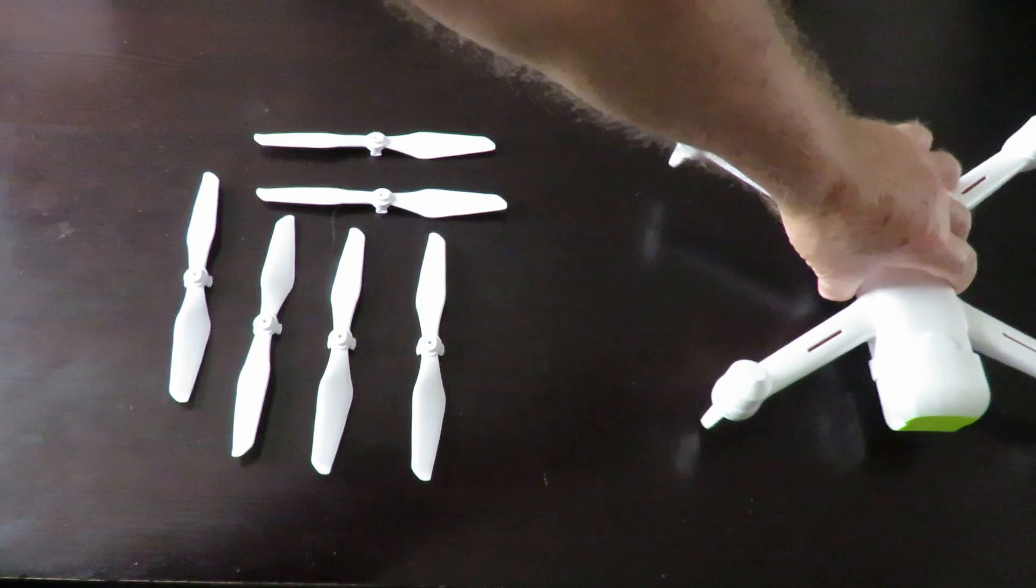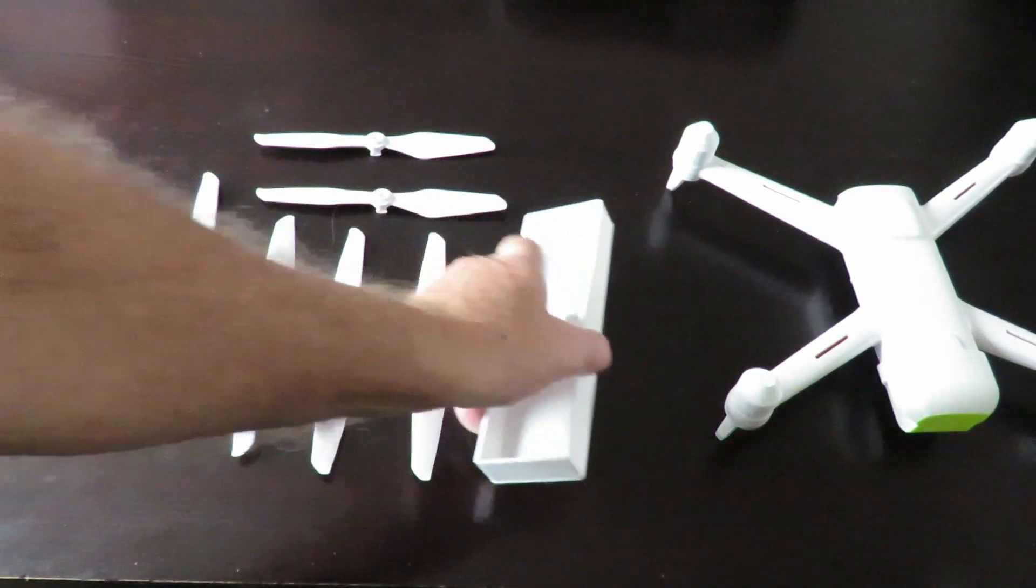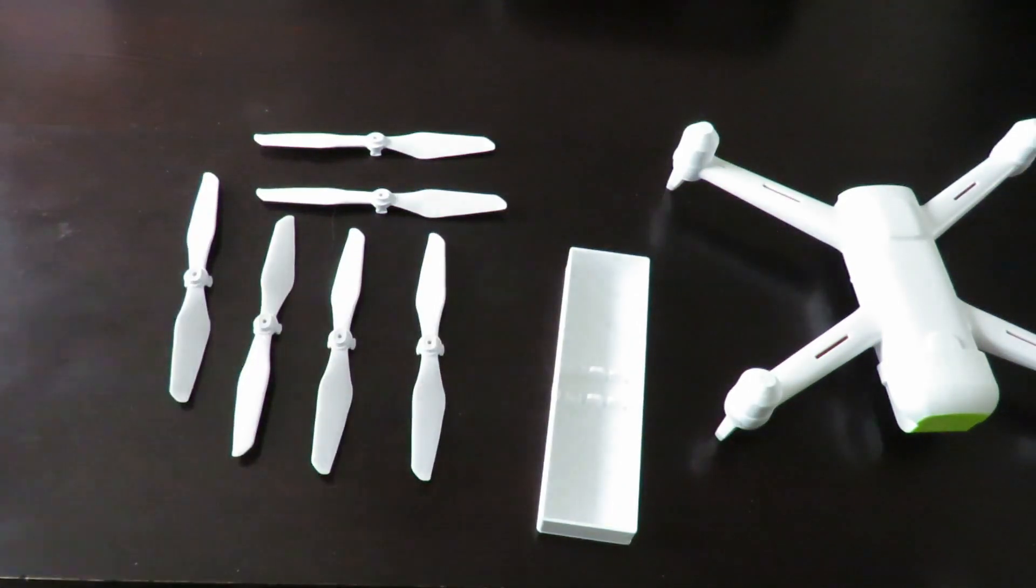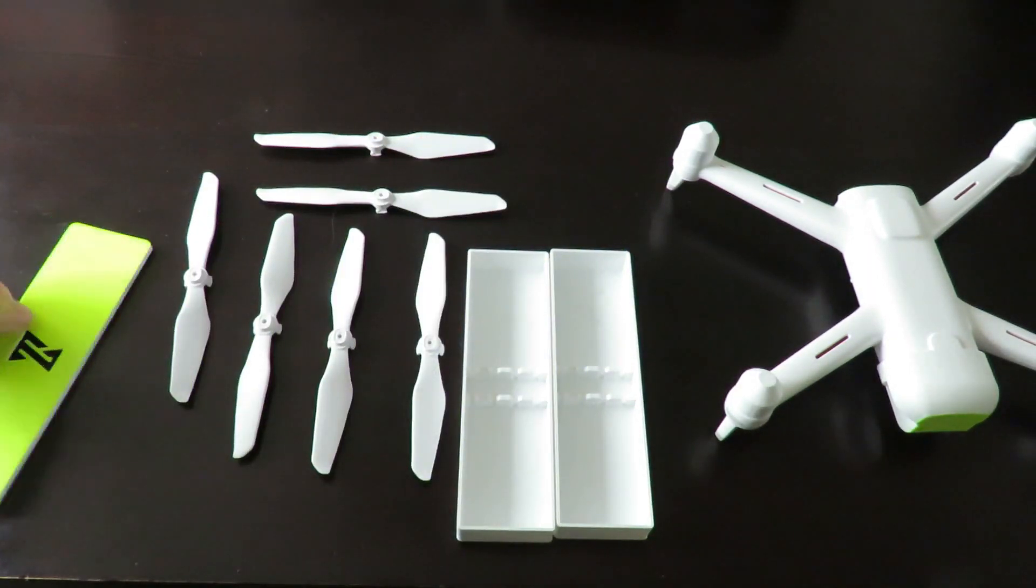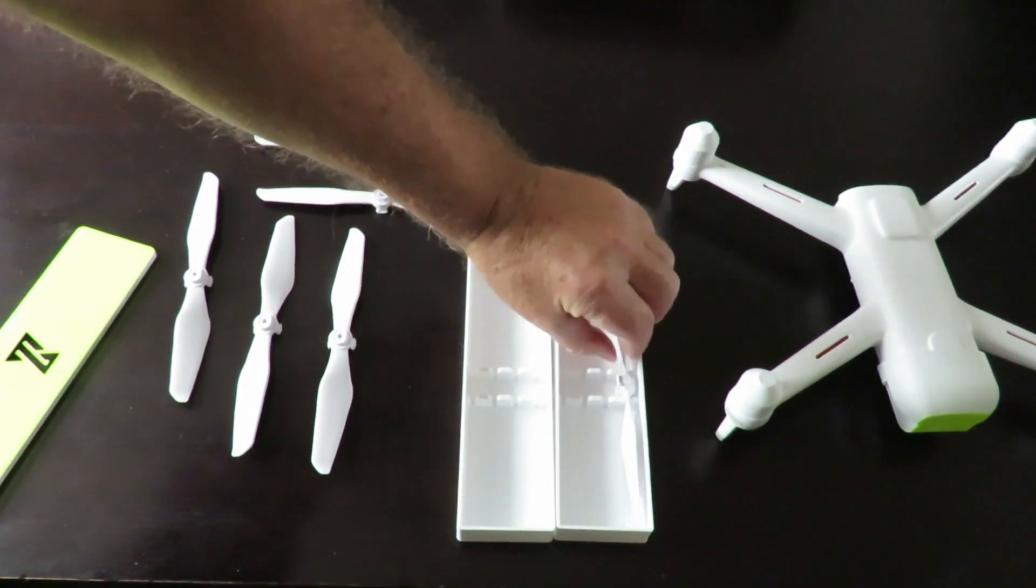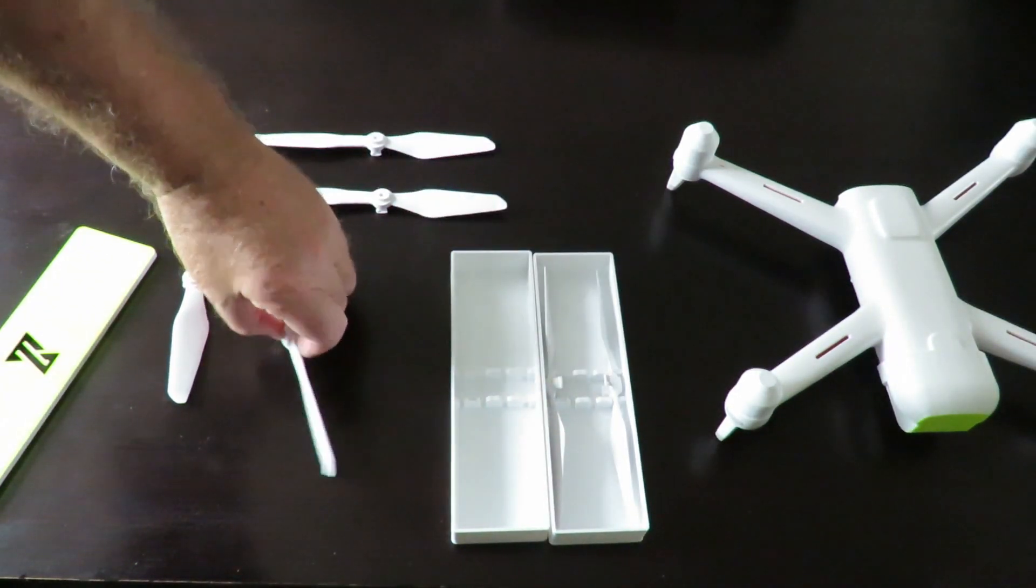We'll put that aside for the moment. Now the next thing, of course, is propellers. You've got six, so what I've done is printed a couple of propeller boxes and some lids to go on them. The propellers themselves just slot nicely in.